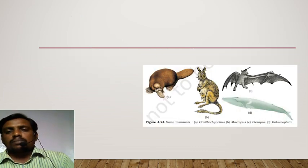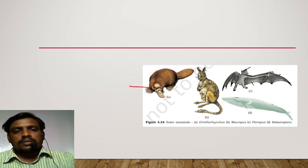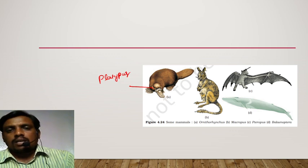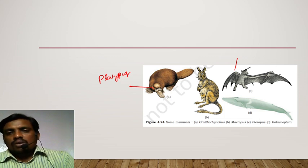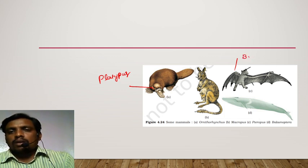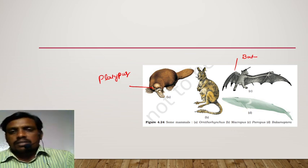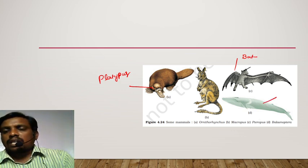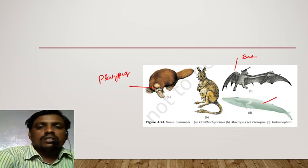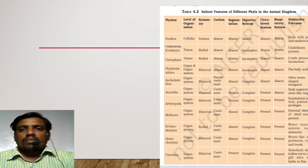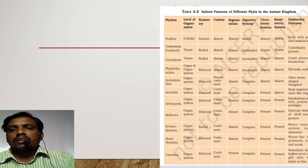Let us see some of the examples for mammals. This is a platypus, which lays eggs — the only mammal which lays eggs. This is a flying mammal — Chiroptera, a bat. And this is an aquatic mammal, the largest animal on earth — Balaenoptera musculus. And as you know, that remaining animal is a kangaroo. Apart from this, salient features and different phyla in the animal kingdom.